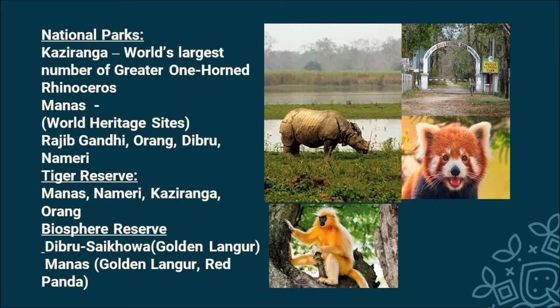Let's have a look at the National Parks, Tiger Reserves, and Biosphere Reserves of Assam. Kaziranga National Park, which is also a tiger reserve, is famous for the greater one-horned rhinos and has the world's largest number of rhinos. Manas National Park, which is a World Heritage Site, is also a tiger reserve and biosphere reserve, and it preserves the Golden Langur and Red Panda.